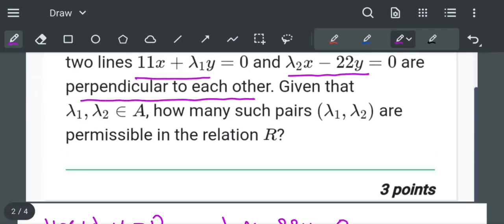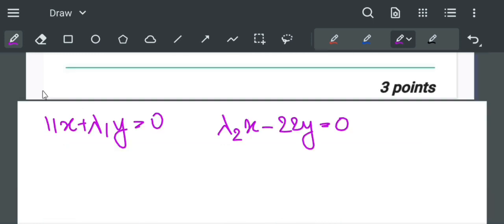Given that λ₁, λ₂ belong to A, how many such pairs (λ₁, λ₂) are permissible in the relation R?